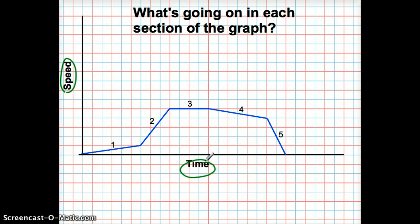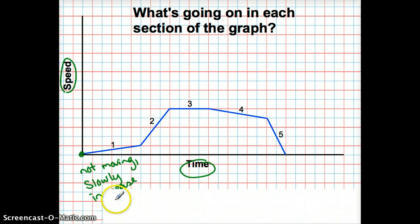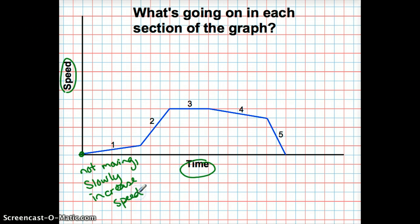So I'm going to look at each of these sections. At the very beginning they are not moving, but then in section one they slowly increase the speed. They're not moving at first, but then they get a slow increase in speed — maybe something like they are just starting to pull out of a driveway or something like that.